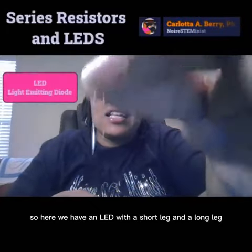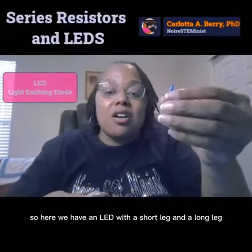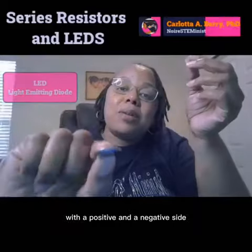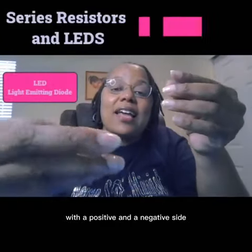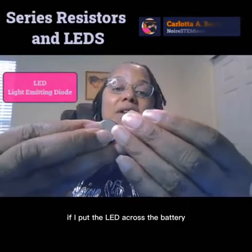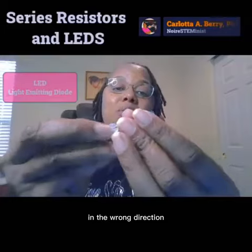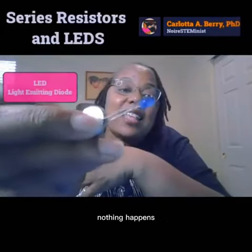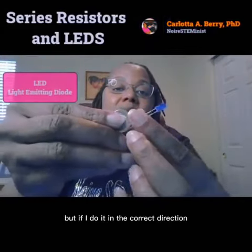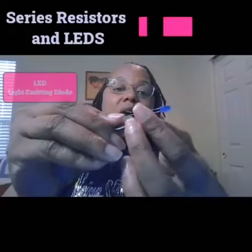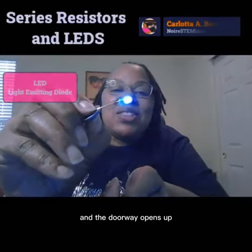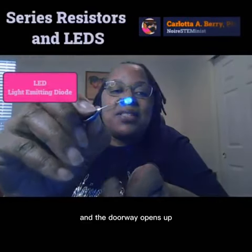Here we have an LED with a short leg and a long leg, and I have a 3-volt battery with a positive and a negative side. If I put the LED across the battery in the wrong direction, nothing happens. But if I do it in the correct direction, the light turns on and the doorway opens up.